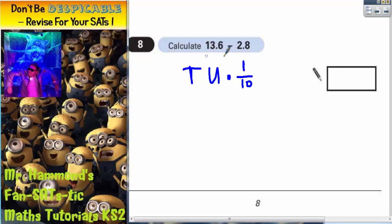So 13.6 goes like this, and 2.8 is two units, the point eight, the eight is eight tenths like that, and it's a takeaway. Now we've got it lined up properly, it's just a simple case of being careful.